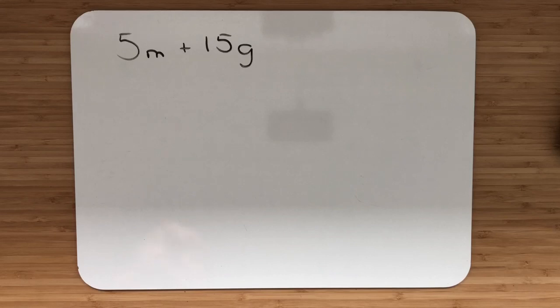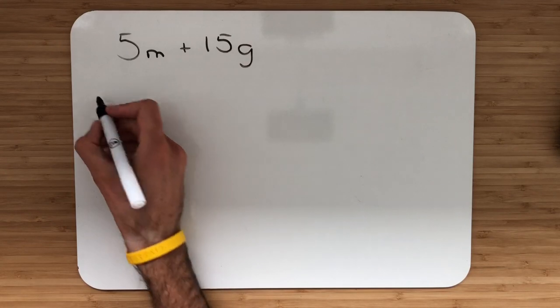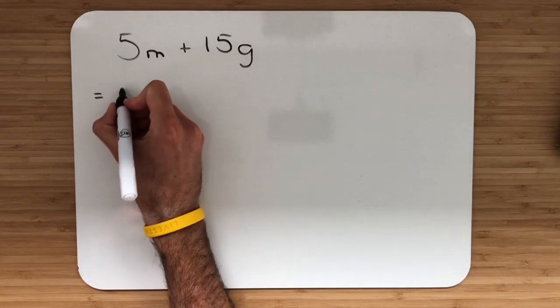Example 2. Factorise 5m add 15g. In example 2, we're going to check for the highest common factor of 5m and 15g. The number that goes into both of them is the number 5.